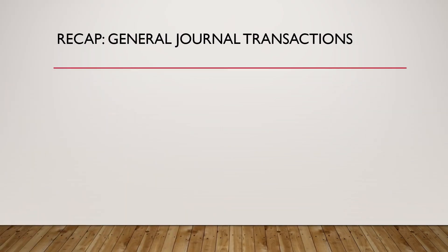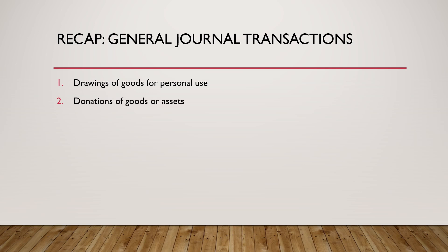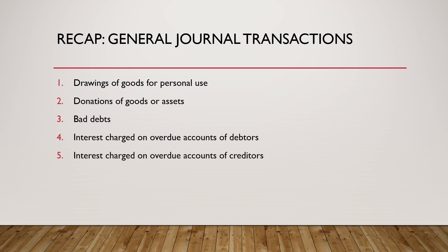To recap, this is a summary of all the transactions we recorded in the general journal: drawings of goods for personal use, donations of goods or fixed assets, bad debts, interest charged to overdue accounts of debtors, interest charged to overdue accounts of creditors, and purchases of fixed assets and other expenses on credit.